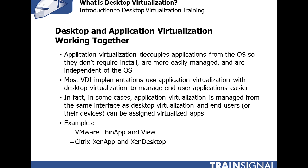Just as desktop virtualization decouples the operating system from the hardware, application virtualization decouples the applications from the operating system. Applications no longer require installation in the operating system to be used. Because of this, they're far more easily managed and independent from the operating system. Applications can look like just single executables — you can have Microsoft Word as just word.exe, run it, and you're running Word without ever installing it. You could put it on a USB flash drive, run it over the network, or have end users run Word 97, Word 2003, Word 2007, and 2010 all at the same time on the same computer because none of them had to be installed.